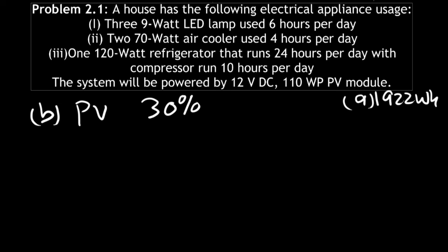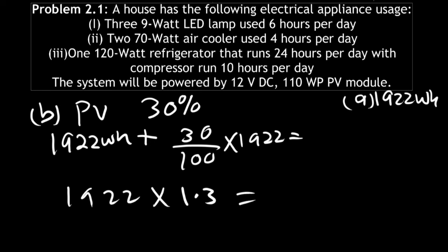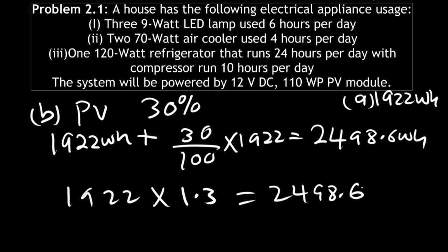So what you do is take our watt hours of 1922 and add 30 percent of that. Alternatively, you can take 1922 directly and multiply it by 1.3. Both approaches give us 2498.6 watt hours. We have now completed the second step, getting 2498.6 watt hours.